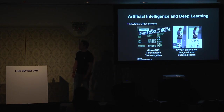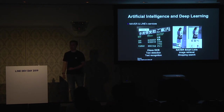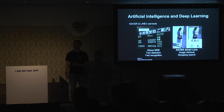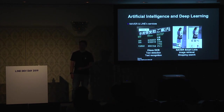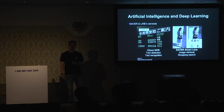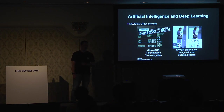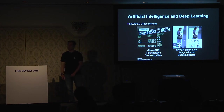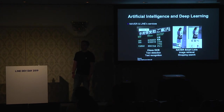Also, in Naver and Line services, artificial intelligence and deep learning are very important. In our Clova OCR team, we developed text detection and text recognition methods to read text in images. Also, Naver Smart Lens, developed by the Clova Vision team, enables image searching and shopping item searching with very good performance.